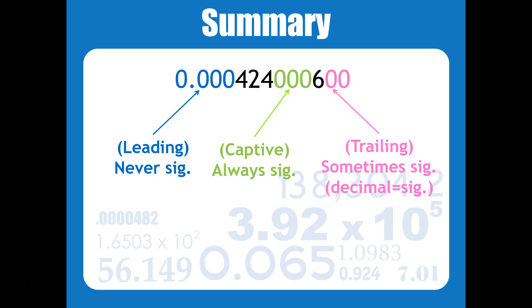Based on our rules, can you tell how many significant figures there are in this number? Take a minute to think about it. You can pause the video if you need to. Did you figure it out? So again, these zeros in the beginning are leading zeros, so they're never significant.